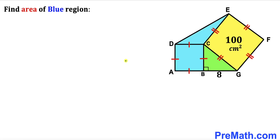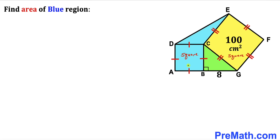Welcome to pre-math. In this video we have got a blue square, a green right triangle, a yellow square, and a blue triangle put together as shown in the diagram, such that the area of the yellow square is 100 centimeter square and segment BG is 8 centimeter. The blue is a square and likewise the yellow is a square as well. Our task is to calculate the area of the blue shaded region — the square area and the blue triangle region area.